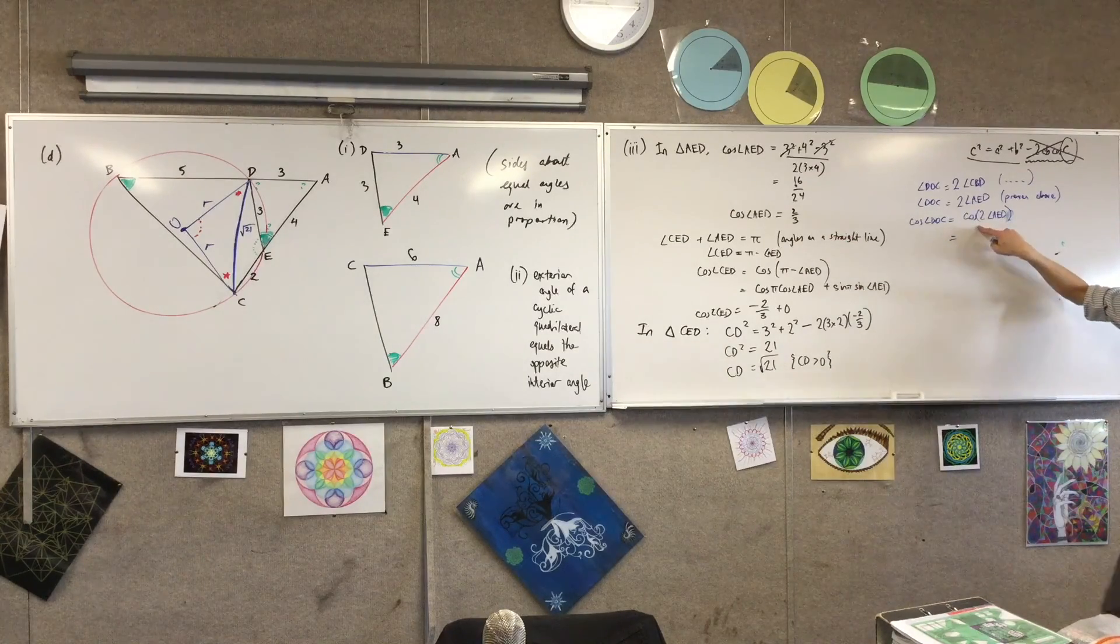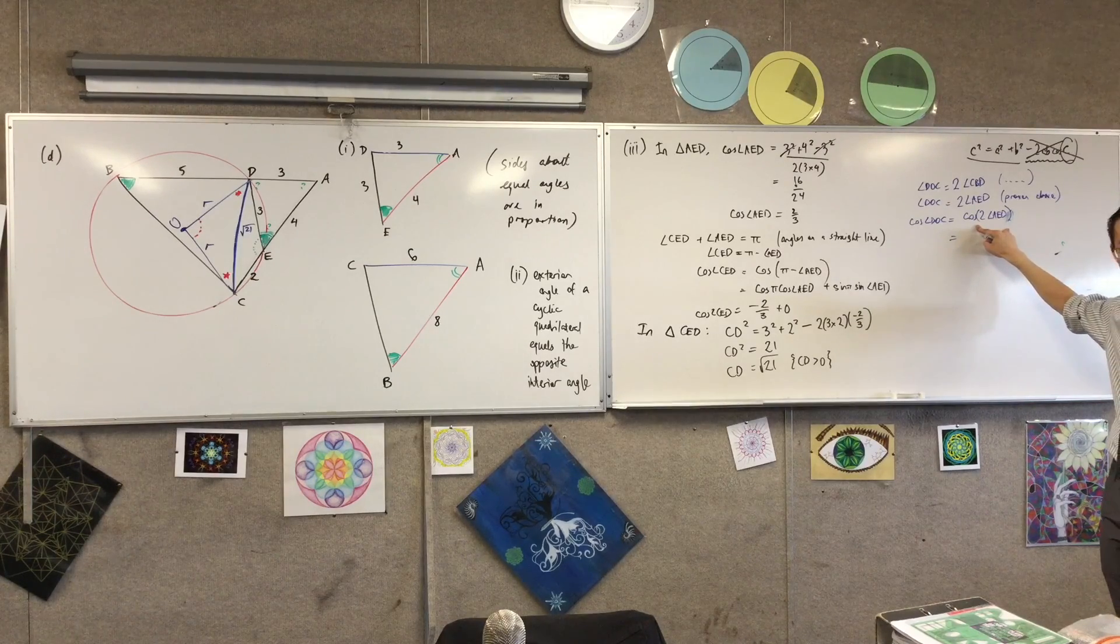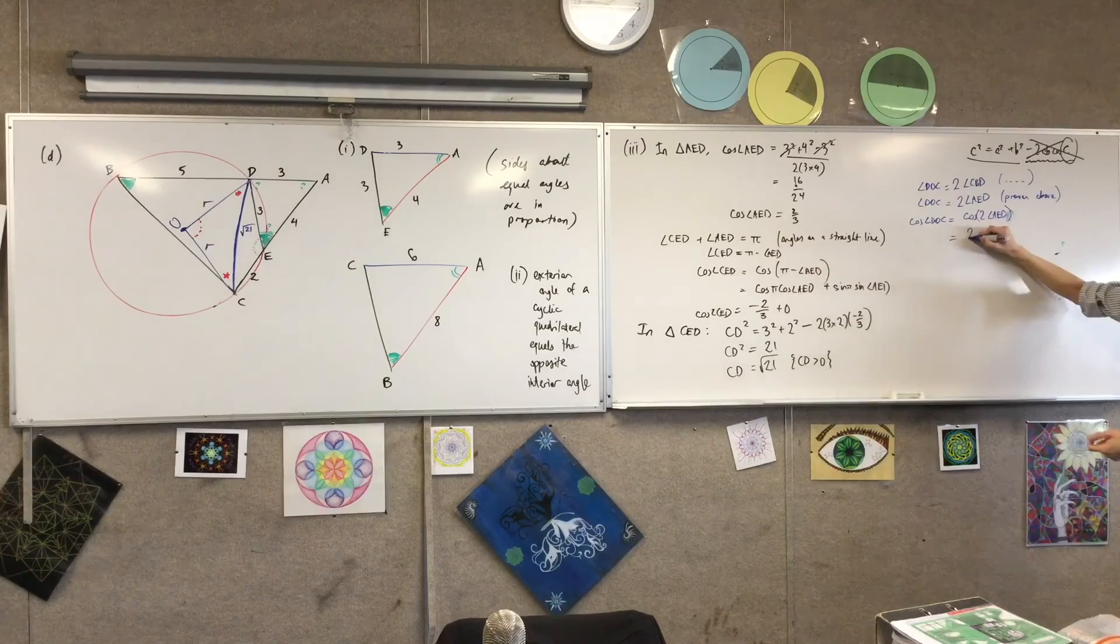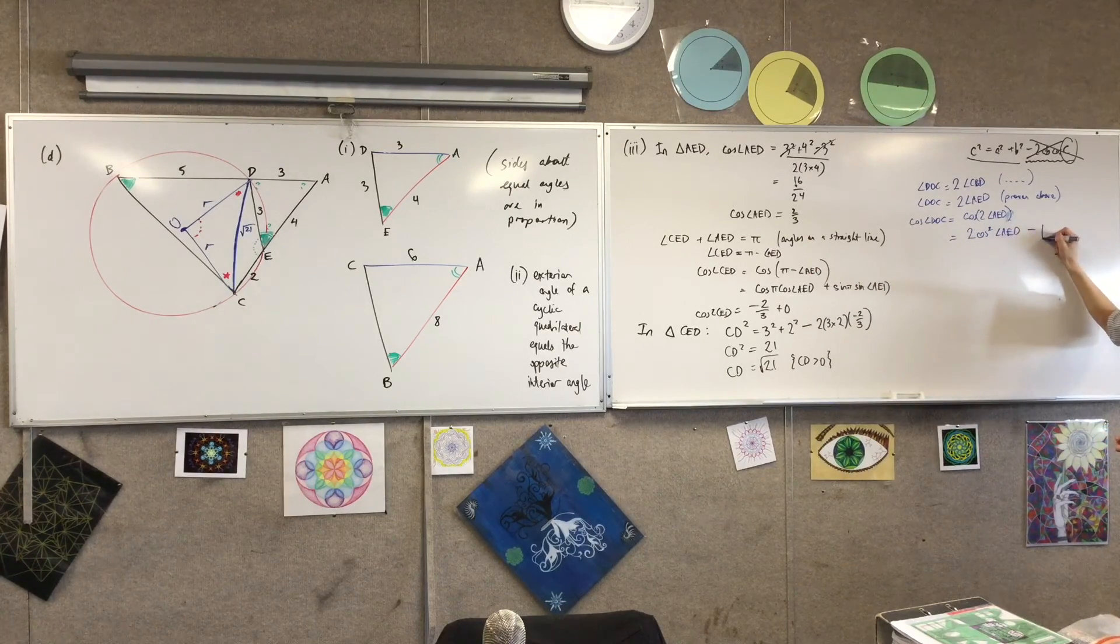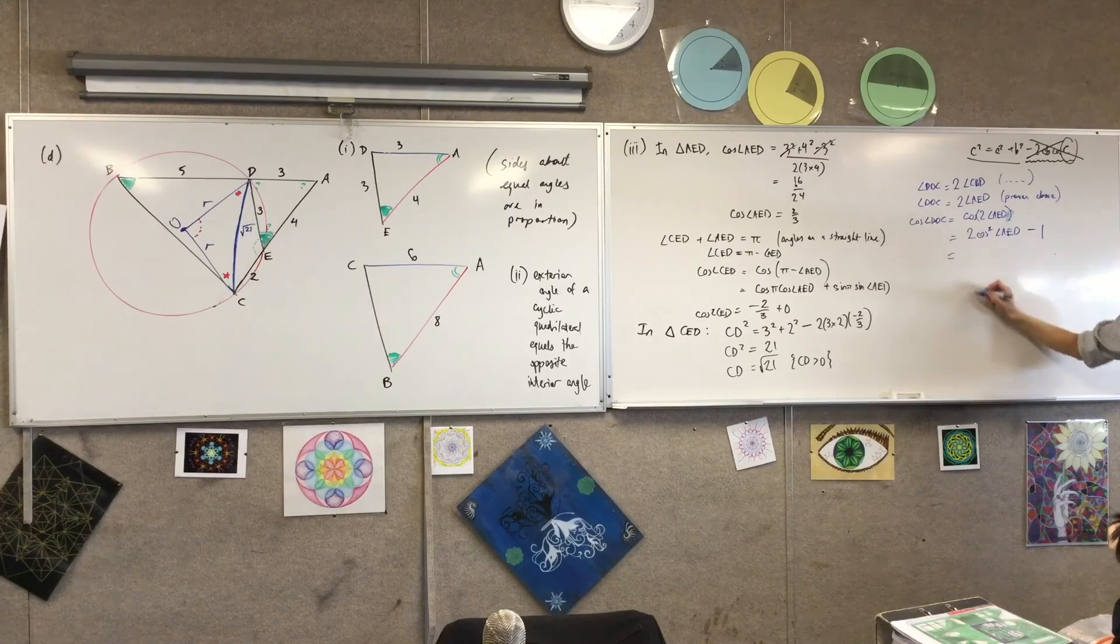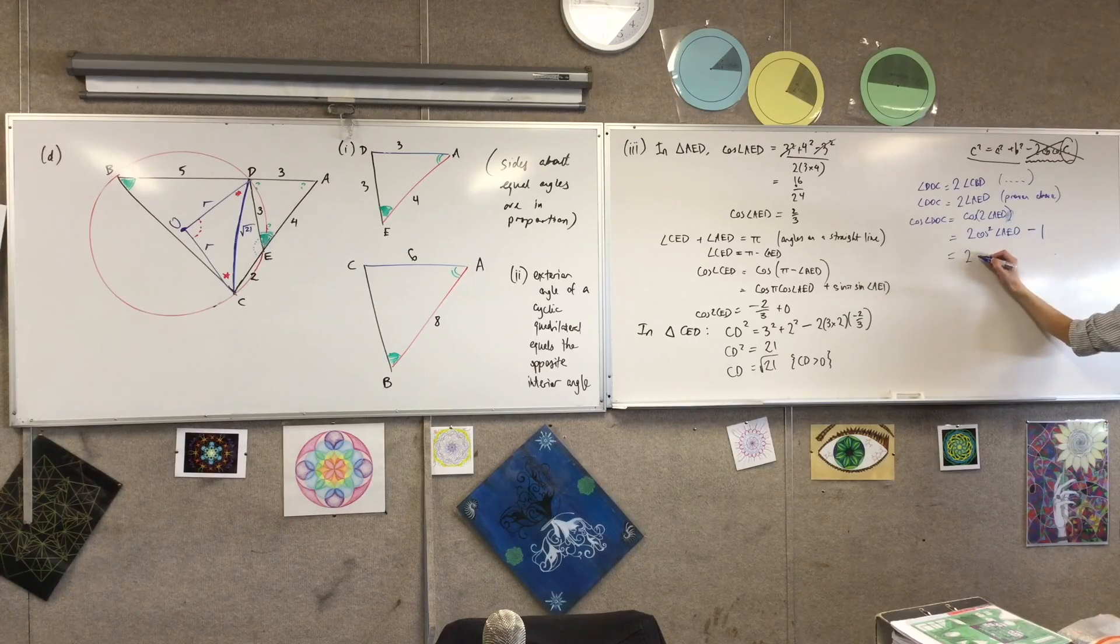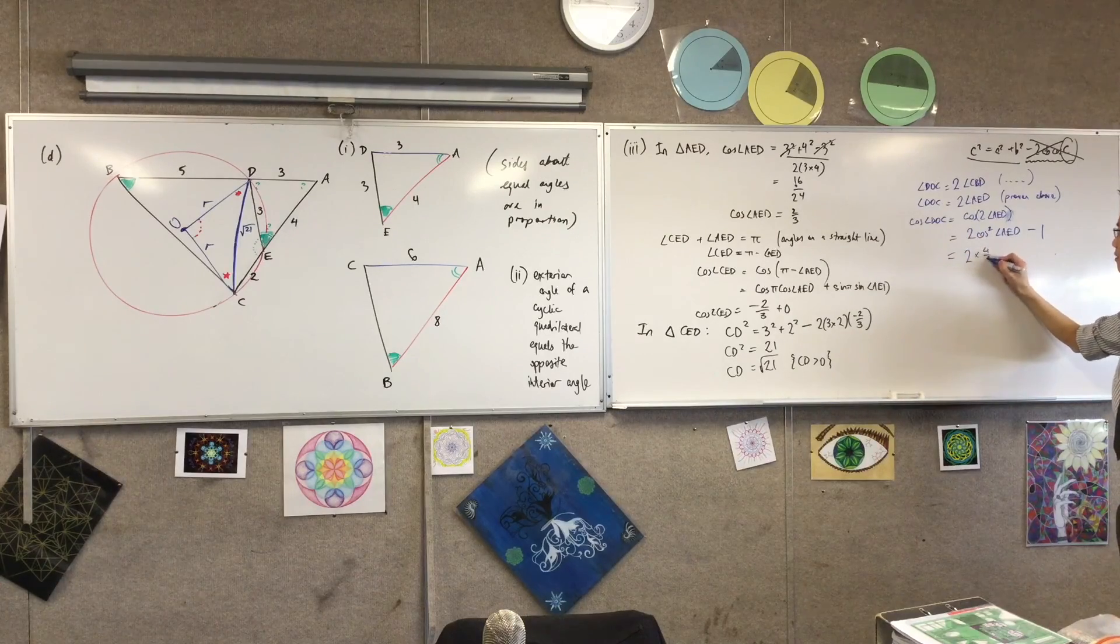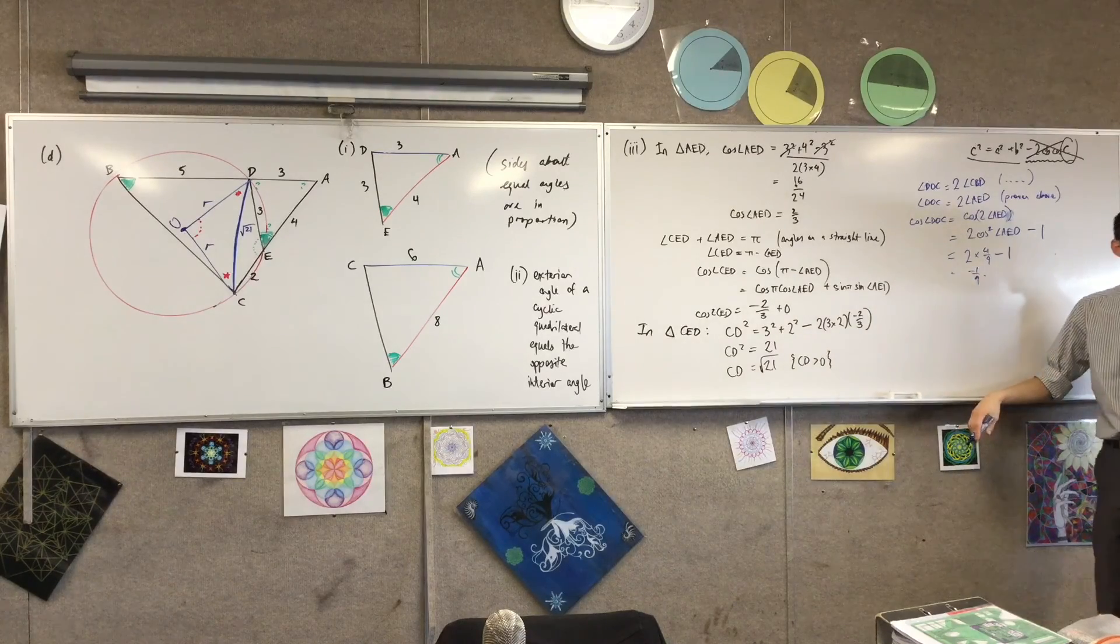Now, this is great, because I know what cos AED is. So what's the relationship between these two guys? What identity can I use? It's double angle. Now, I can choose cos squared minus sine squared, or 1 minus 2 sine squared, or 2 cos squared minus 1. Which of those is the best choice? Yeah, the one with cosines in it. So I'm going to write 2 cos squared AED take away 1. I know what these numbers are. Let's see, 2 times 4/9. Take away 1. That's 8/9. You take away 1, that's negative 1/9. You happy with that?